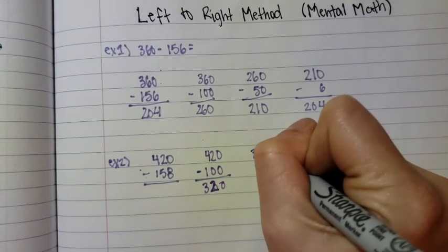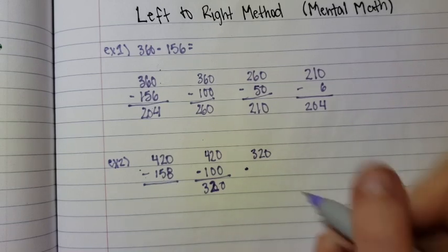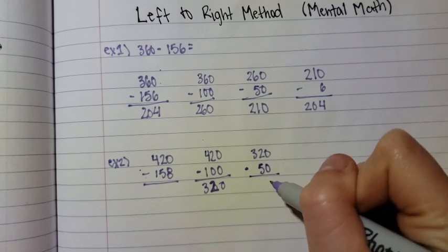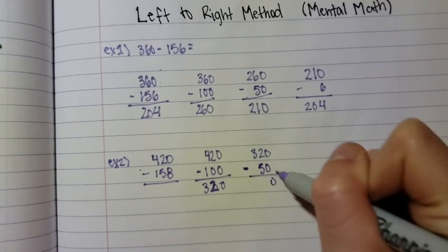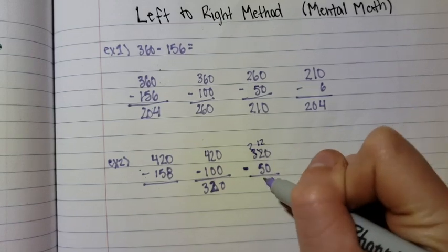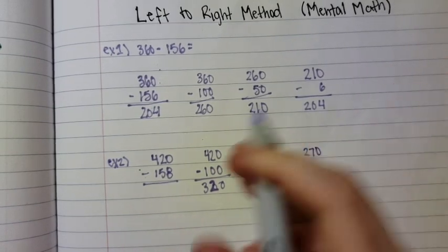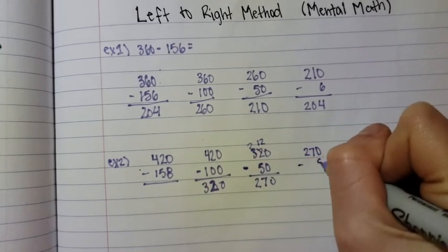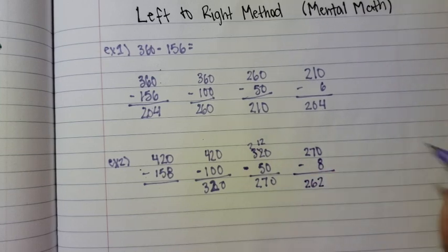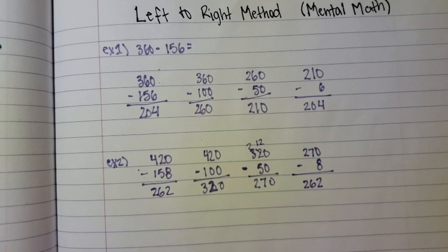Then we're going to take our 320 and subtract by the 10's value, which is 50. We're going to come back over here and subtract 50, which is 270. And then we're going to take 270 and subtract by our 1's value, which is 8, which equals 262. So, 420 minus 158 is 262.